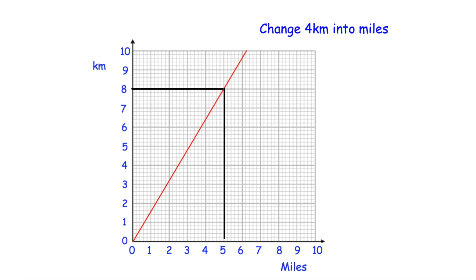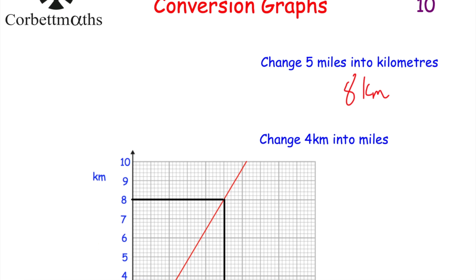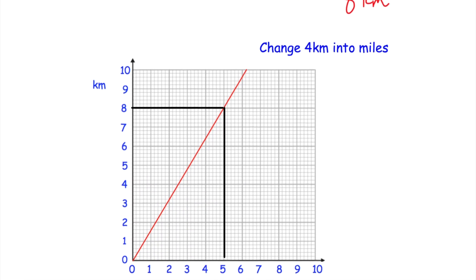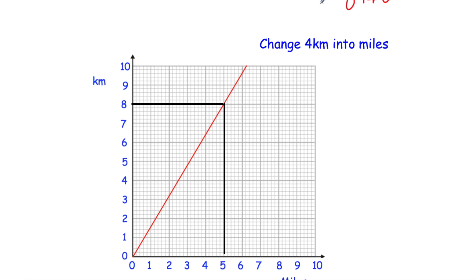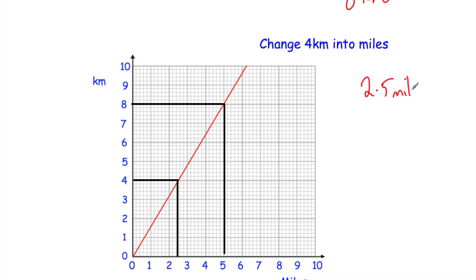That's eight kilometres, so five miles is approximately equal to eight kilometres. For the second part — changing four kilometres into miles — kilometres is on the vertical axis, so I go to four kilometres, across to the line, and then down. That lands exactly in the middle between two and three, so that's 2.5 miles. So four kilometres is approximately equal to 2.5 miles. Well done if you got that!